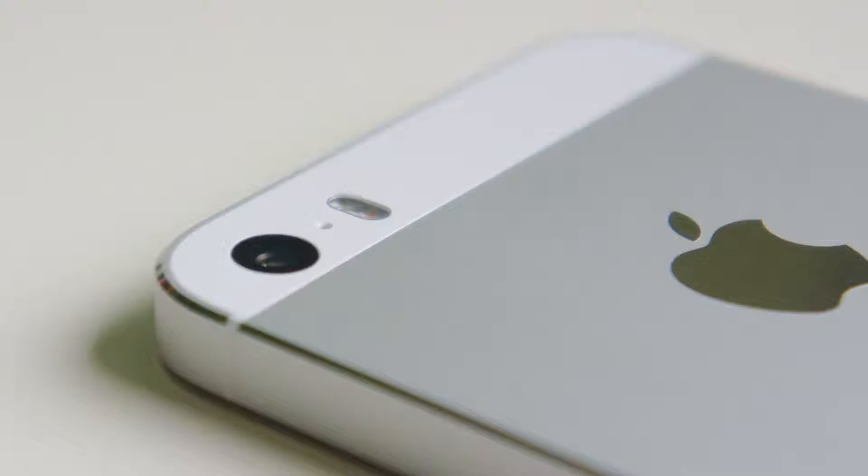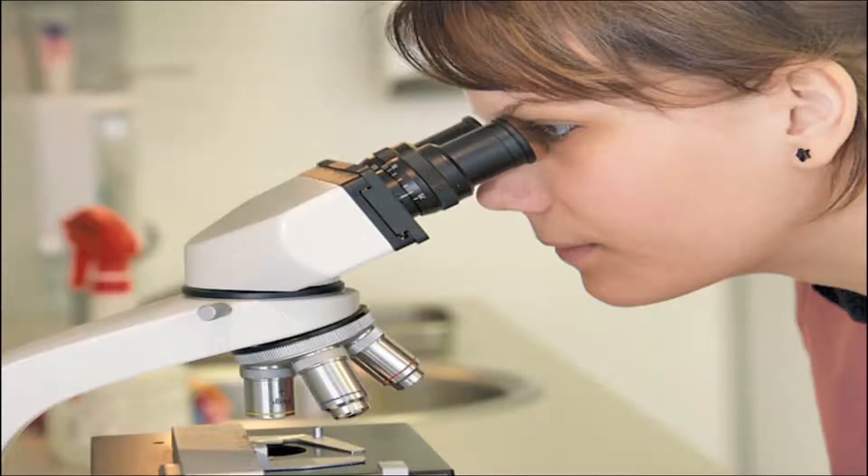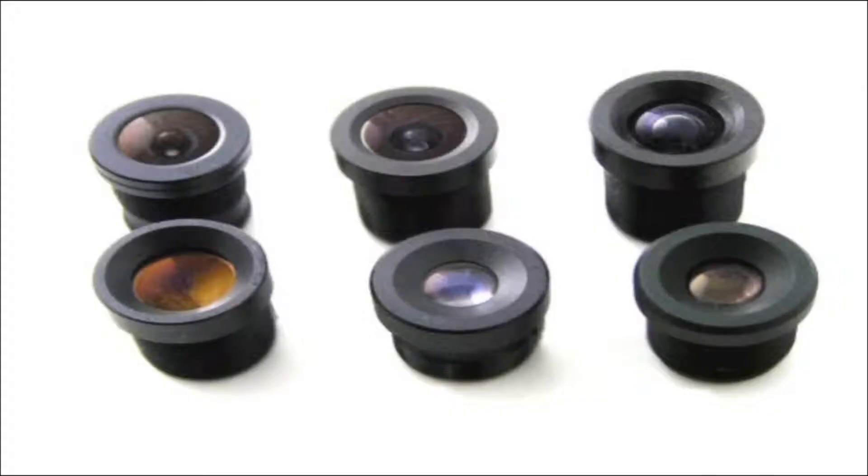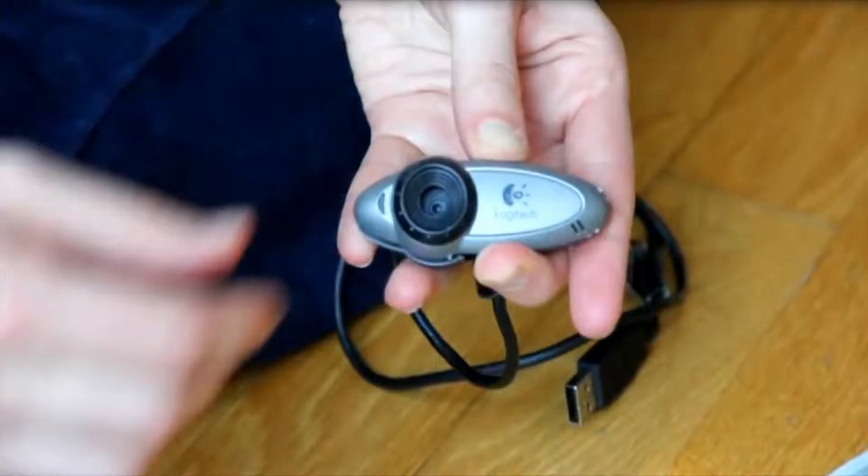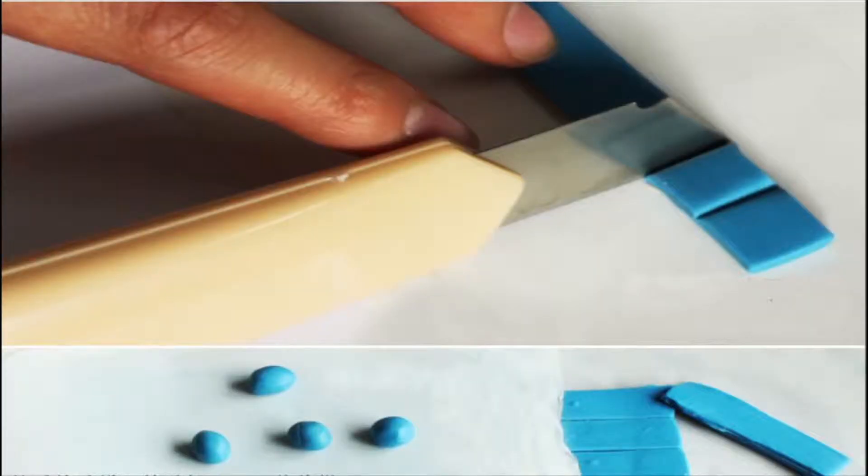Hi, in this video I'll show you how to use your phone camera as a microscope. First you need to get a camera lens or a CD reader lens or a webcam.